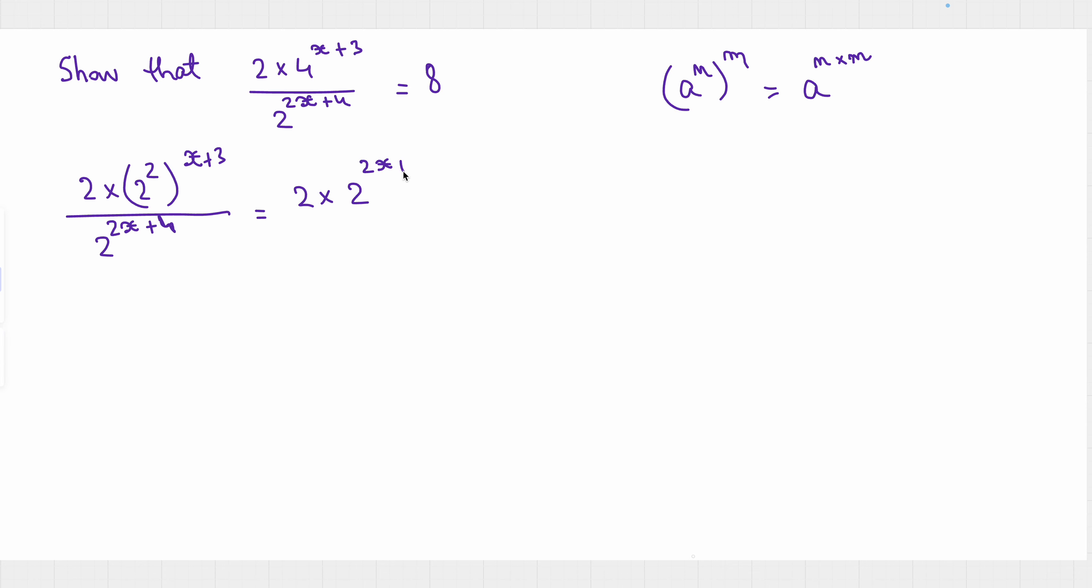So 2x plus 6 divided by 2 to the power 2x plus 4 is the same thing as written this way. And here if we don't have any powers, we can write 1.